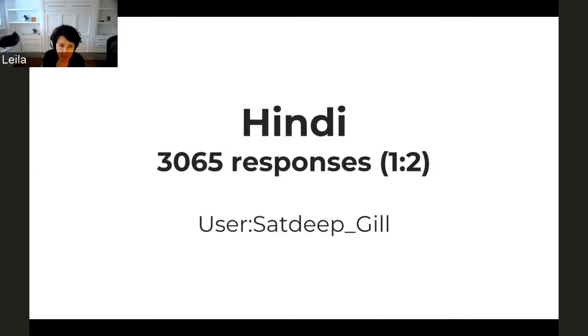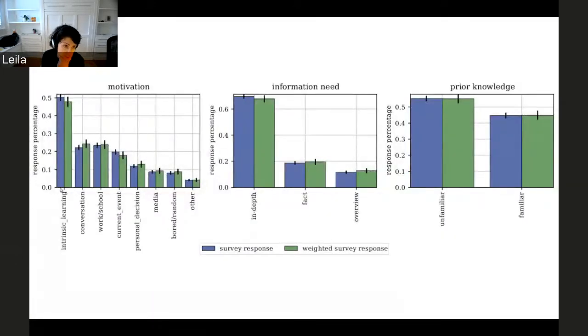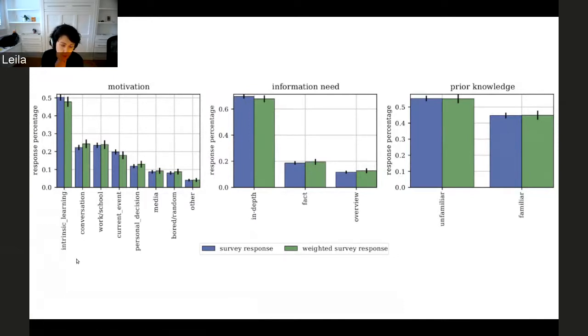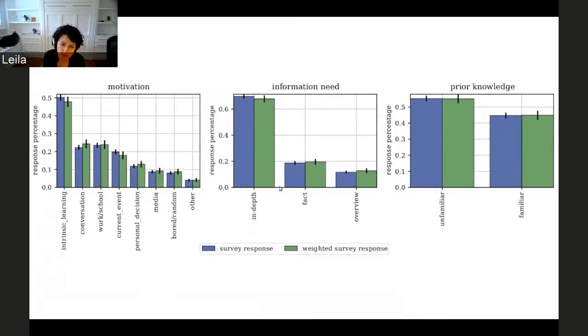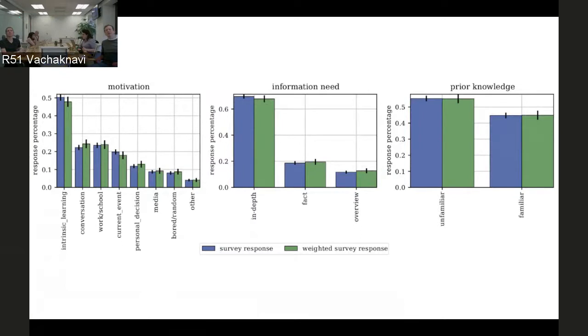I'm not going to go over all 14, worry not. I'll show you a couple more. For Hindi, 3,000 responses. What we see here again, intrinsic learning is reported as a significant factor as a motivation for coming to Wikipedia, followed by conversation. These are both interesting. One is that learning seems to be, at least in terms of self-report, a strong motivator. We actually don't see such a sharp decline from one motivation to the next, I think, in any of the other languages. And the other thing that is interesting is that conversation seems to be a big factor for initiating people to come to Wikipedia, which is pretty nice. Users report a lot of in-depth reading, and we need to dig into web request logs to see if this indeed is the case. So we can come back to this, but this is the highest in-depth reading reported across languages.